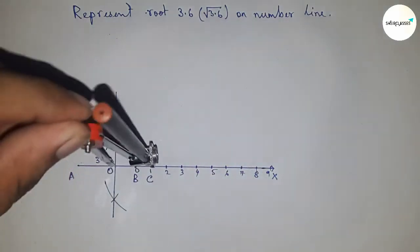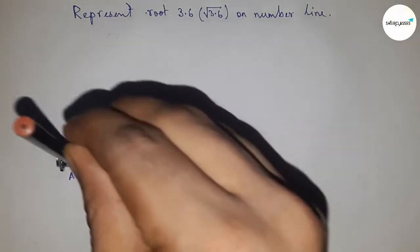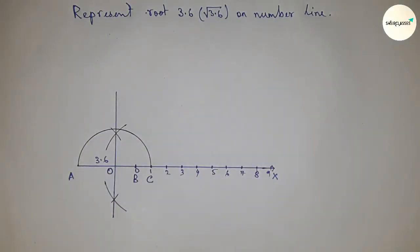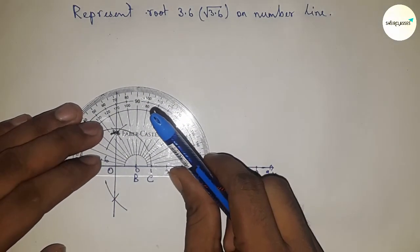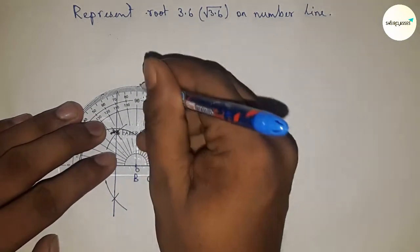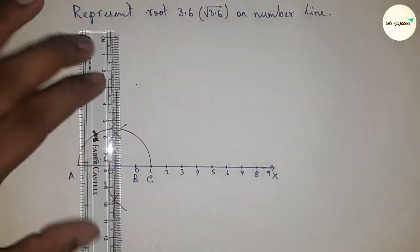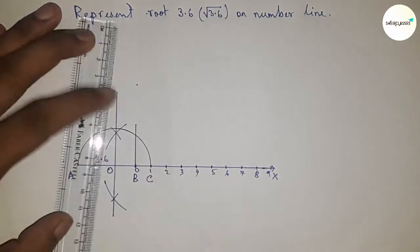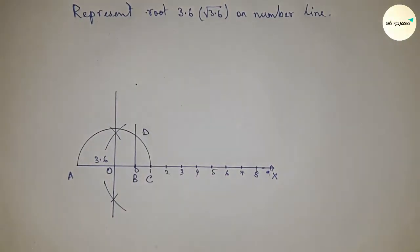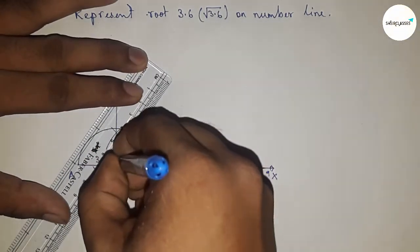Take the distance OA and OC to draw a semicircle through points A and C. Next, draw a 90-degree angle at point B using a protractor. Join this, which meets at point D.